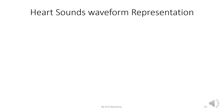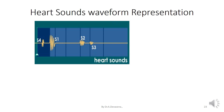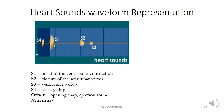The heart sounds waveform representation is given below. In this waveform we have S1 sound, S2 sound, S3 sound, and S4 sound. The heart sound S1 is due to onset of the ventricular contraction. The heart sound S2 is due to the closure of the semilunar valves. The heart sound S3 is due to ventricular gallop. The heart sound S4 is due to atrial gallop. Other sounds include opening snap, ejection sound, and murmurs.